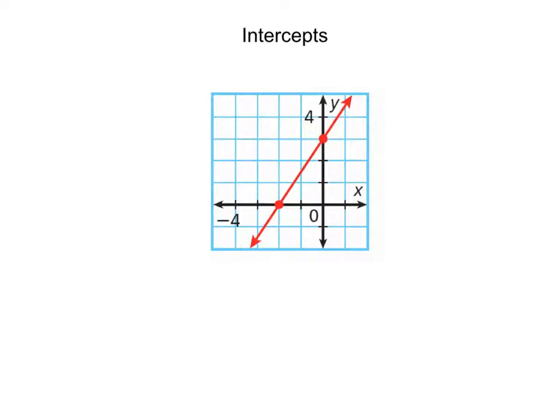Hello. Tonight our video is on intercepts. And when we talk about intercepts on a coordinate plane, there are always two different kinds of intercepts: the x-intercept and the y-intercept. Simply put, the x-intercept and the y-intercepts are the points that are directly on the x-axis and the y-axis.